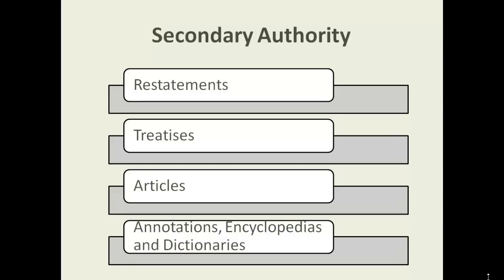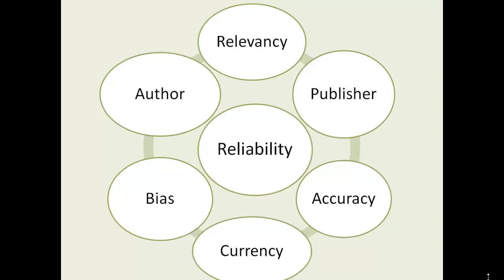All of these secondary authority resources are useful to a researcher, but you may prefer one over another depending on your task. For example, if you need a thorough understanding of a practice area, you'll probably lean toward finding a good treatise, which will bring together many concepts and cite you to case law and statutory law. On the other hand, if you are tracking down a judicial doctrine in a common law area, you're more likely to consult a restatement. Regardless of which resource you are using, you must always be vigilant about evaluating it: How relevant is it? Who wrote it? What are their credentials? Do they have a bias? Is the material current?